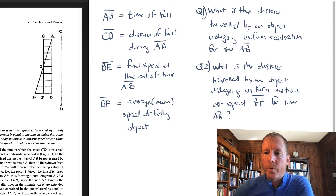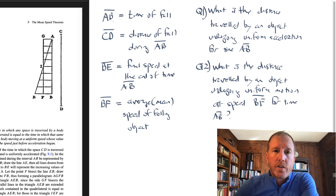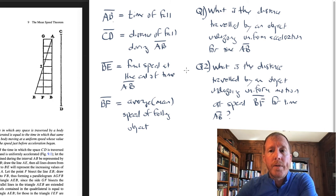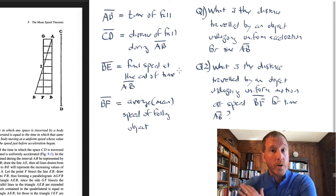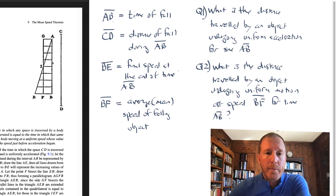In other words, he's saying: if you want to know the distance traveled by an object undergoing uniform acceleration, starting at point A and traveling for a time given by AB — so its final speed is BE — what's the distance traveled by that object? Well, all you need to do is ask a different question: what would be the distance traveled by another object undergoing uniform motion, or constant velocity motion, at the mean speed — that is, the speed given by line segment BF — for the same time interval AB?